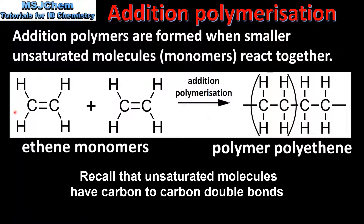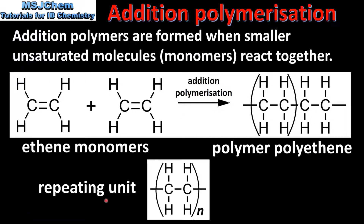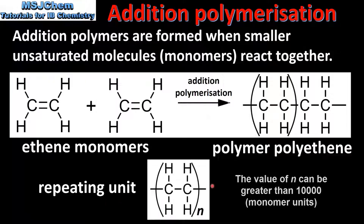In this reaction we have two molecules of ethene, which are the ethene monomers, and they undergo an addition polymerization reaction to form a polymer which is polyethene. Here we can see the repeating unit of polyethene. The repeating unit is the part of a polymer whose repetition would produce the complete polymer chain. So as we can see, polyethene is made up of this repeating unit.